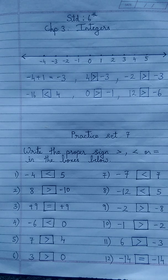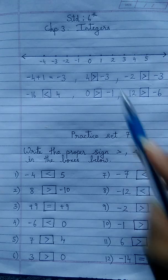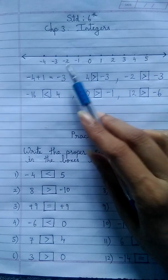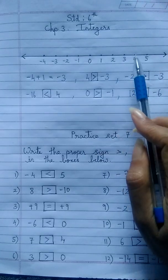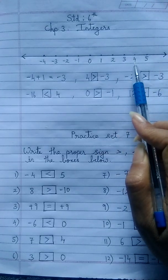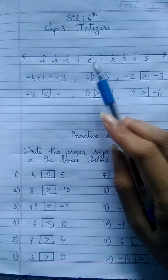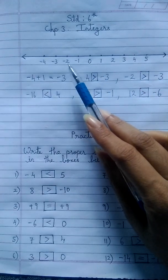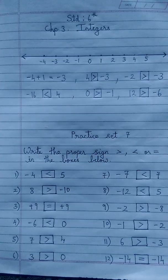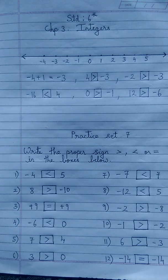Remember: the number which falls to the right side on the number line will be greater than the number which falls to the left side. A very simple exercise — kindly solve all the sums in your book.